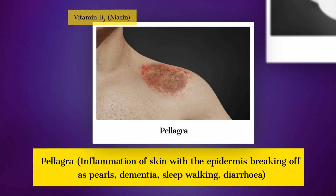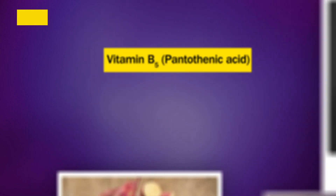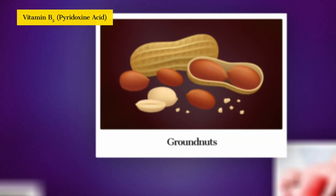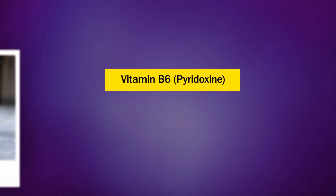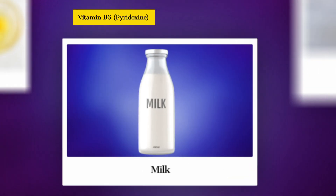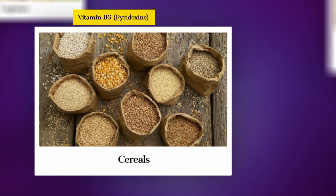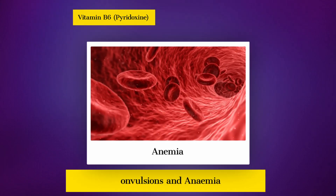Vitamin B5 (Pantothenic acid): Sources — sweet potato, yeast, and groundnuts. Deficiency disease — burning sensation in the sole. Vitamin B6 (Pyridoxine): Sources — yeast, milk, egg yolk, cereals, and grams. Deficiency disease — convulsions and anemia.